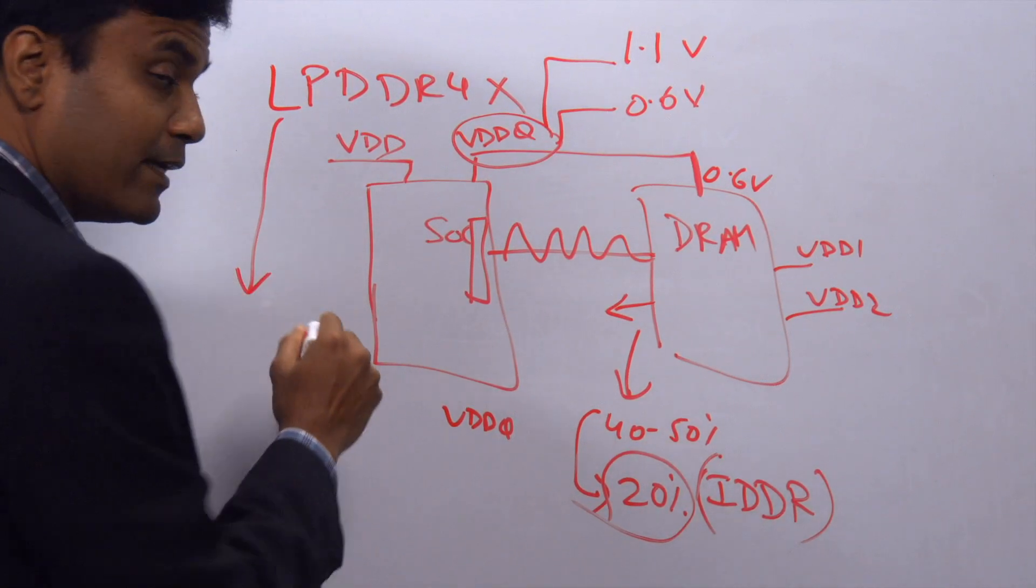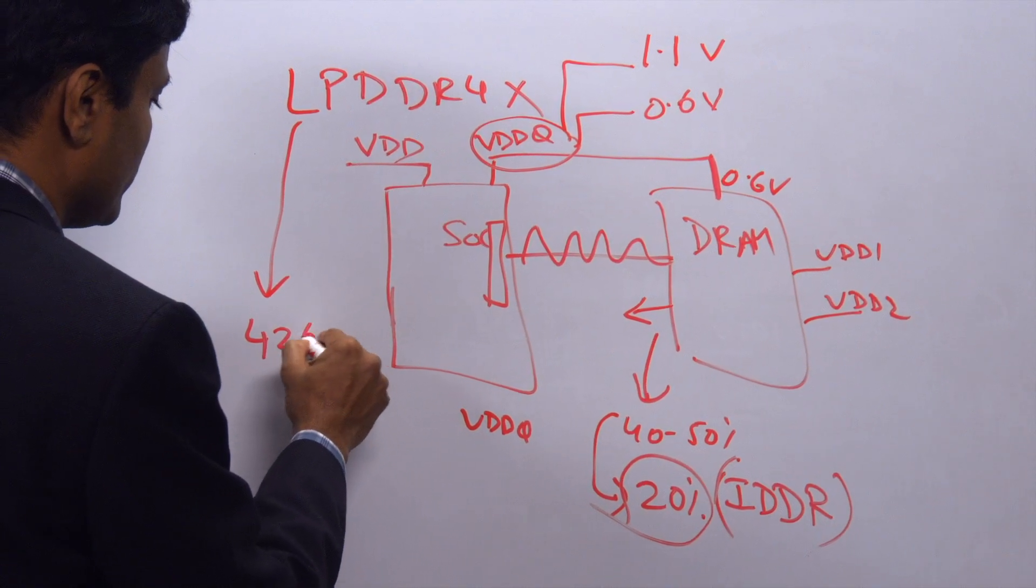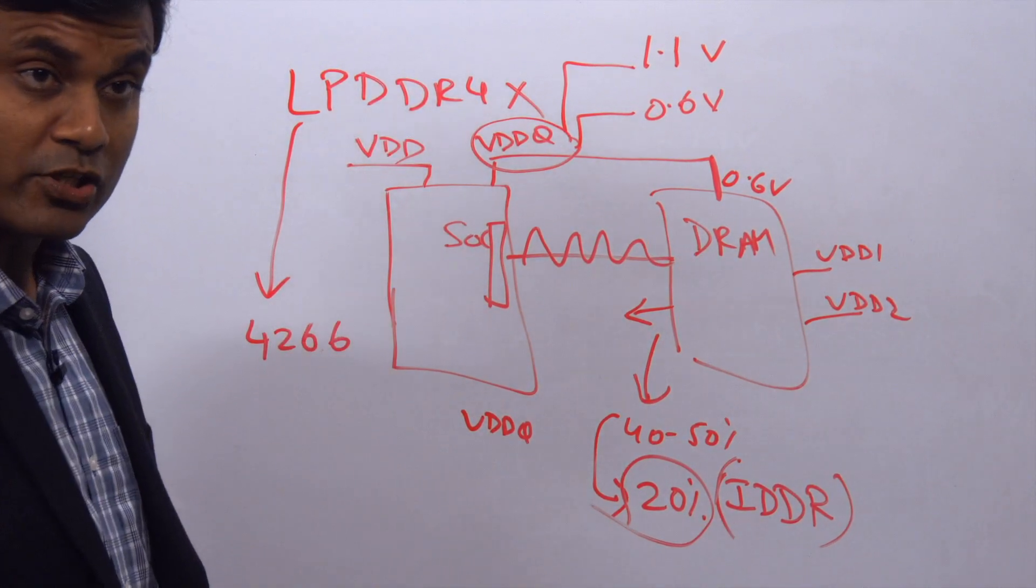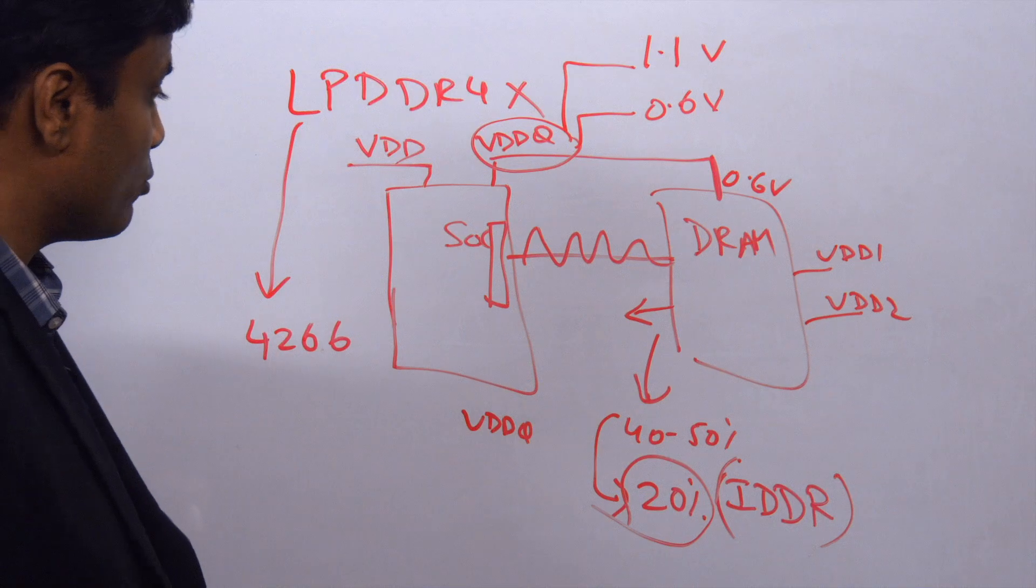LPDDR4X supports the very highest data rates available on LPDDR4, which is 4266. It's in production. These DRAMs are shipping in high volume.